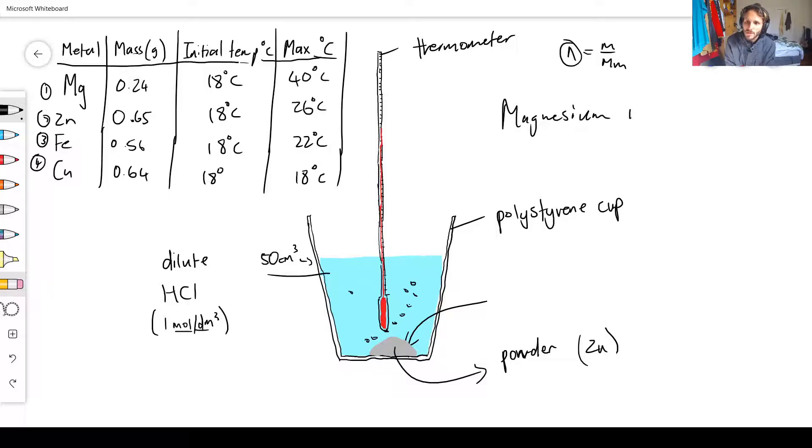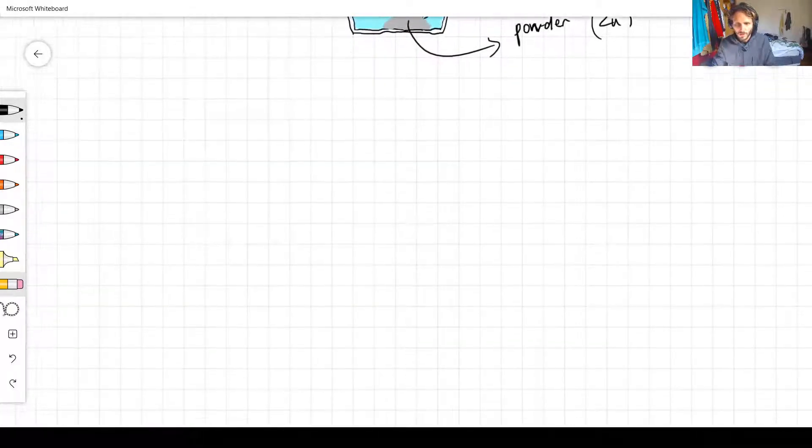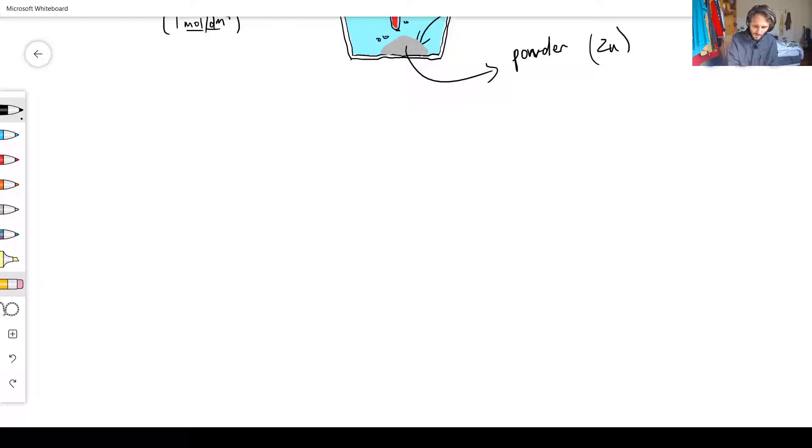So this experiment proves that magnesium is the most reactive metal with dilute acid. That is pretty much it. Let's just do a quick summary of everything going on in this module. Remember this module is all about reactivity.